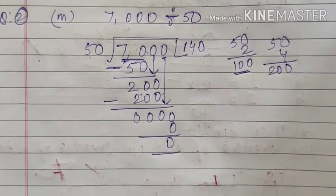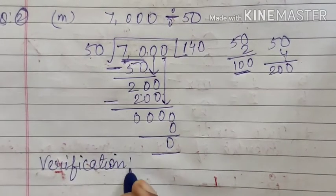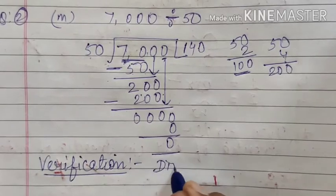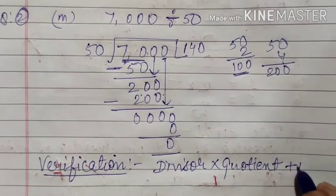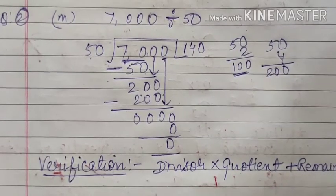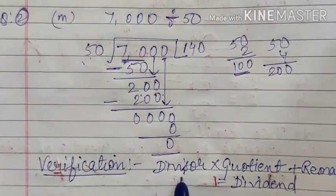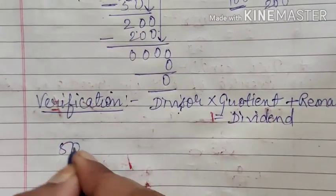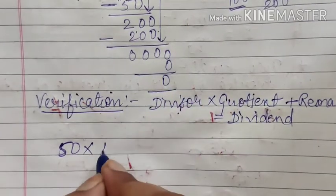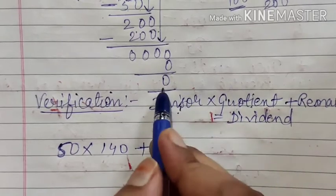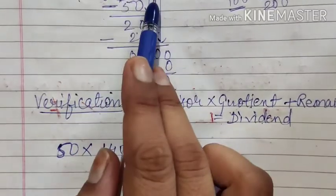Now we have to check the answer. For verification, we will use the formula: divisor into quotient plus remainder is equal to dividend. So instead of divisor we write 50, multiplied by the quotient which is 140, then plus the remainder. Here the remainder is 0. And this must equal the dividend, which is 7000.